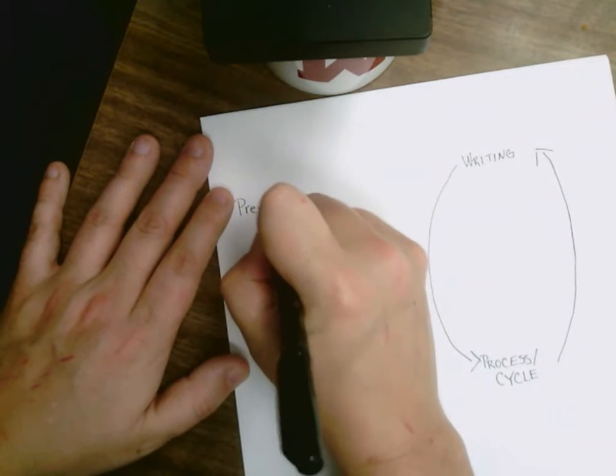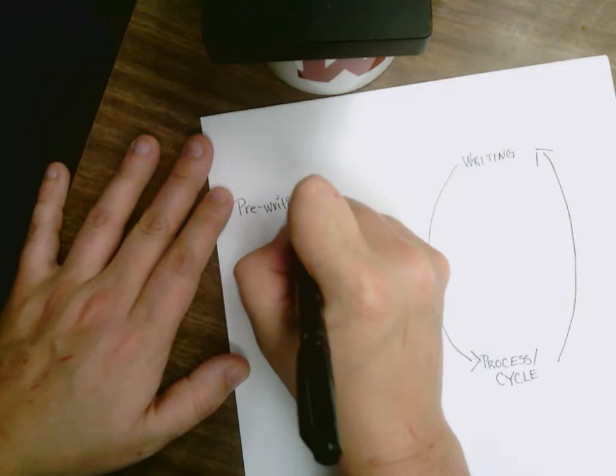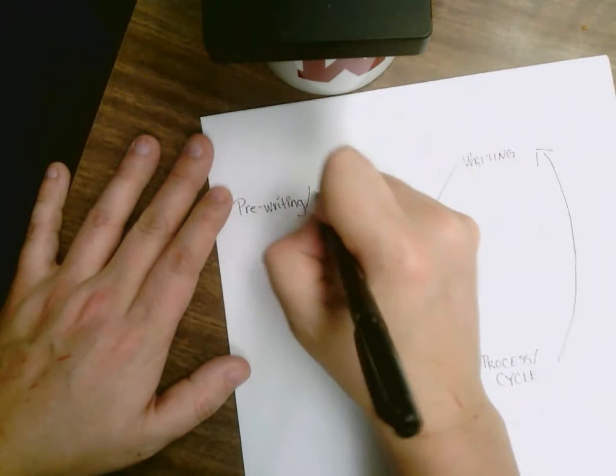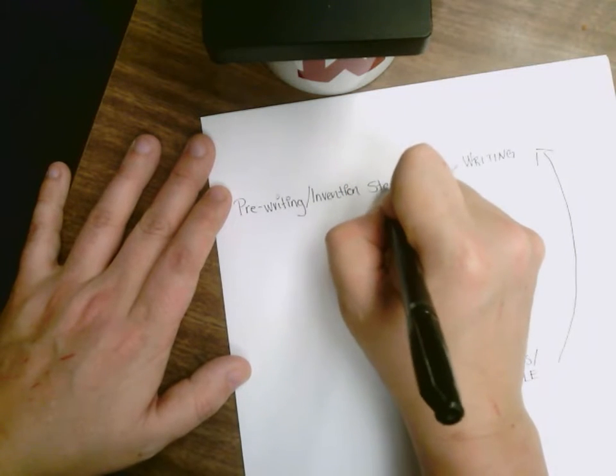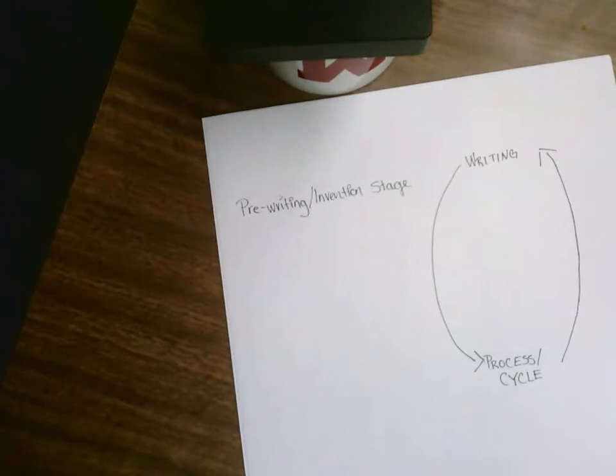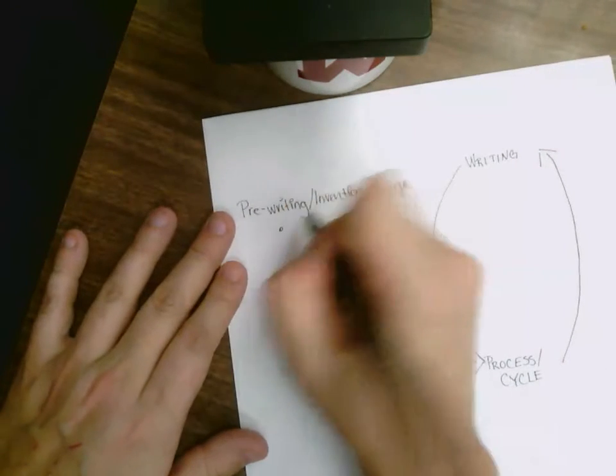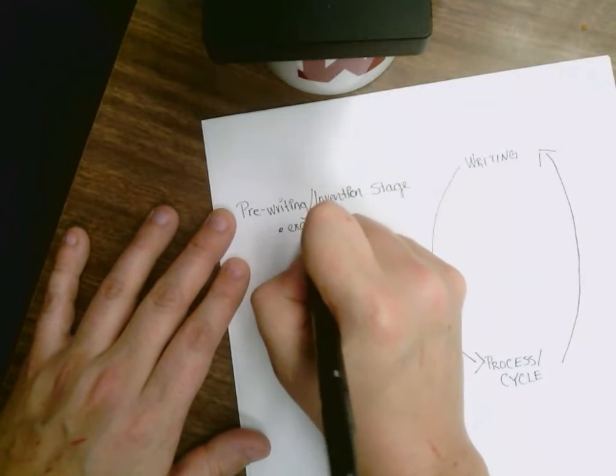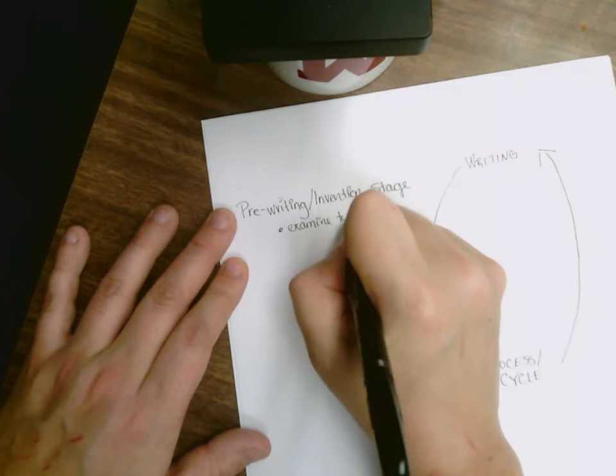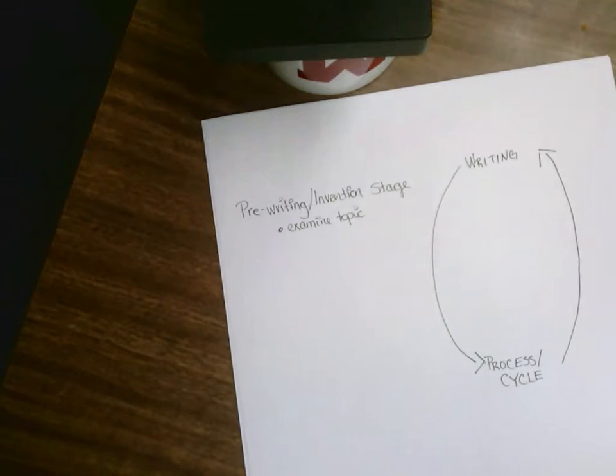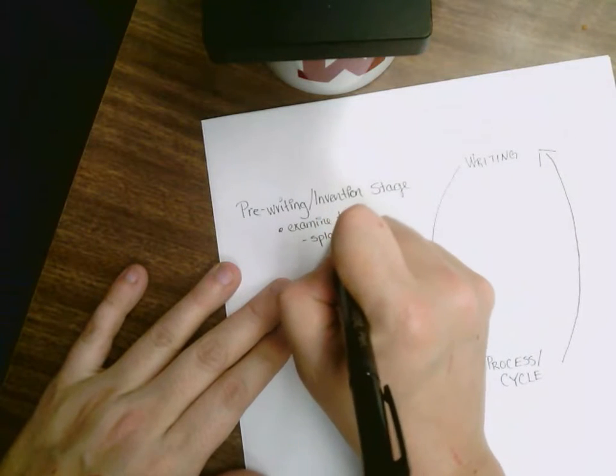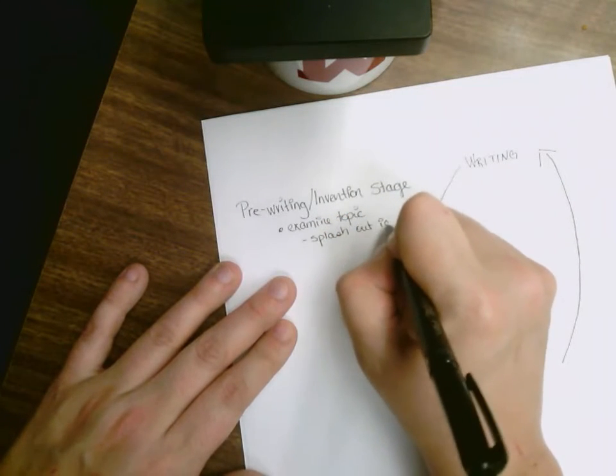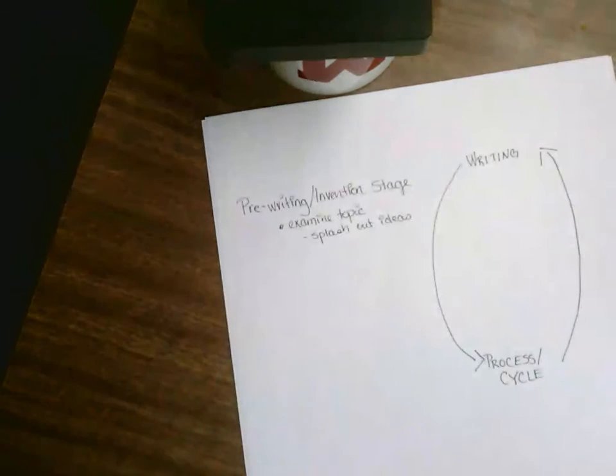Our first step is going to be our pre-writing. We also can call this the invention stage. This is where we look at our topic, we examine that topic, and we come up with ideas based on that topic. We start to let our mind wander and figure out what do we already know about this topic.